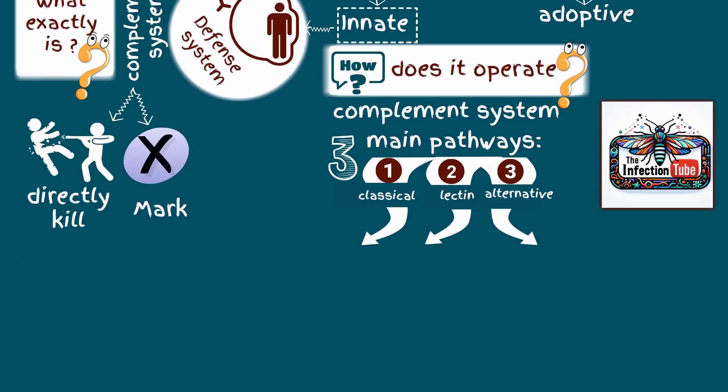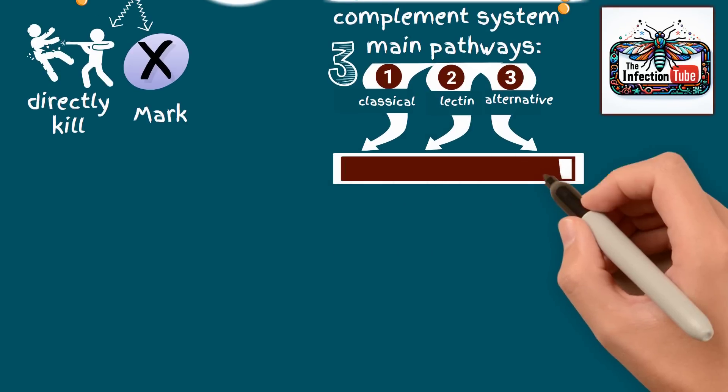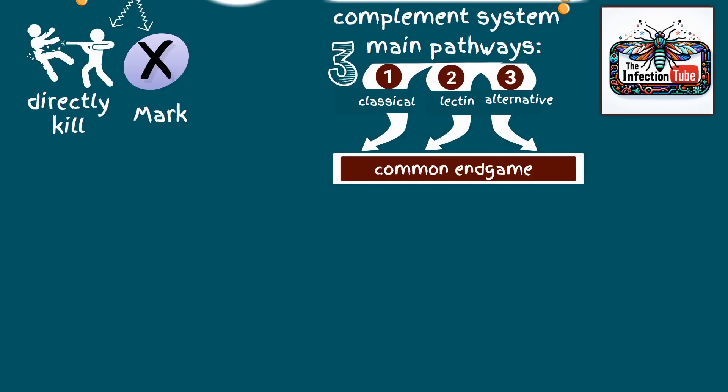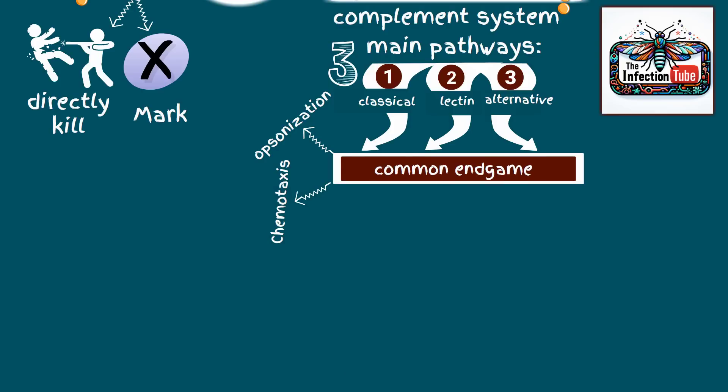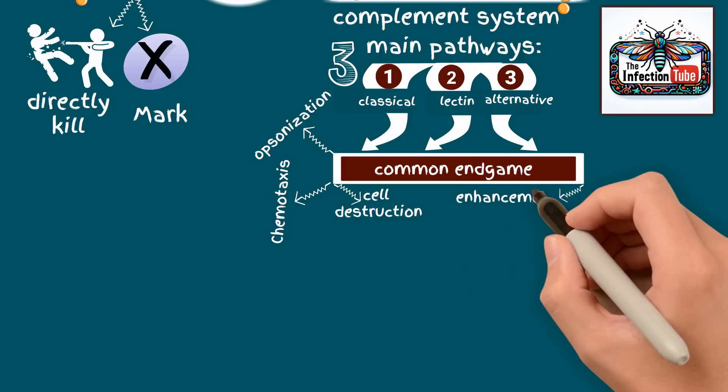Despite their different triggers, these pathways converge on a common endgame. They lead to the opsonisation of pathogens, chemotaxis, which is the mobilisation of inflammatory and immune cells, cell destruction via the membrane attack complex and the enhancement of inflammation.